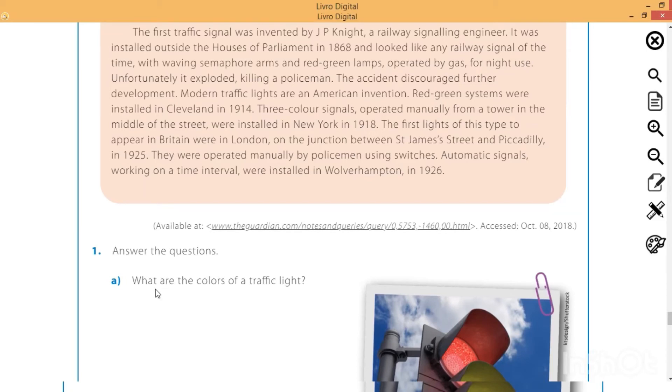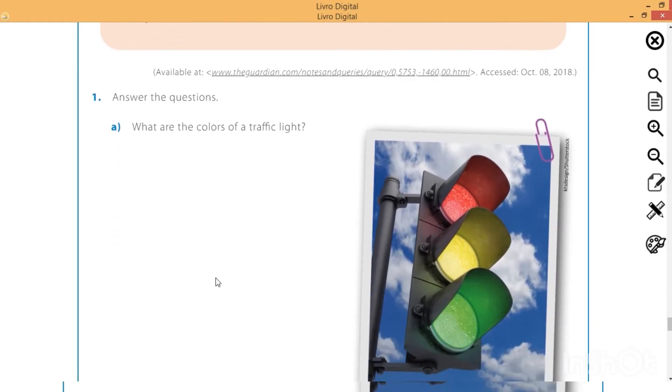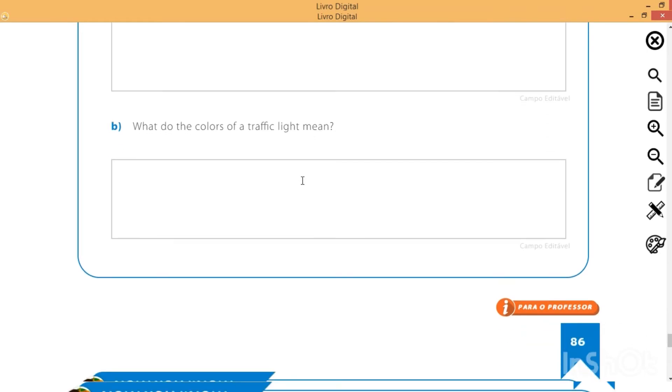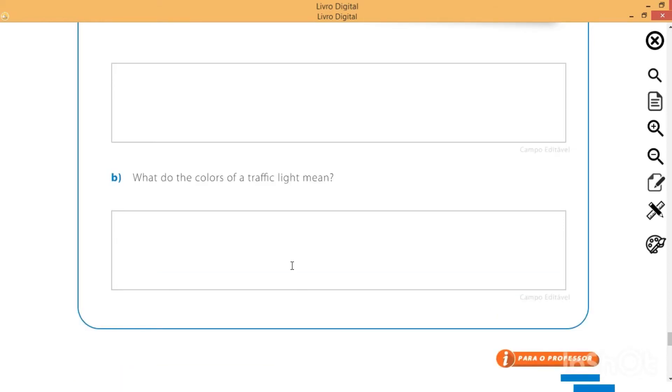Agora vocês vão responder as questões. Letra A. What are the colors of a traffic light? Quais são as cores do semáforo? Nós temos três. Pensa aí um pouquinho, tá super fácil. Letra B. What do the colors of a traffic light mean? Quais são os significados das cores do semáforo de trânsito? O que significa a cor yellow, red and green? Então é isso aí, pessoal. Qualquer dúvida, pode me procurar pelo WhatsApp. Estou à disposição de vocês. Um grande abraço. Kisses. Bye, bye.